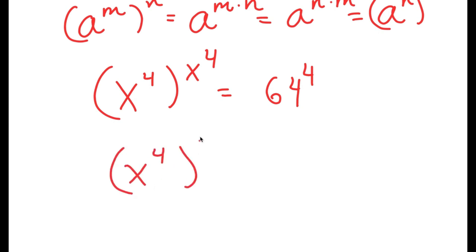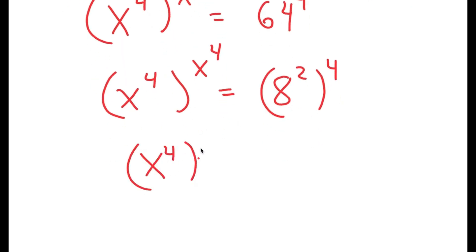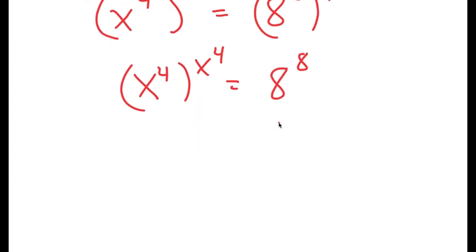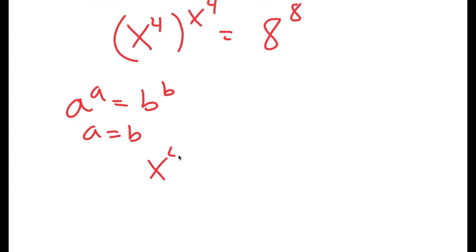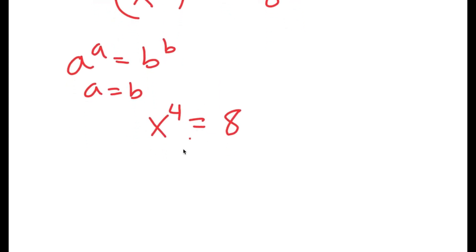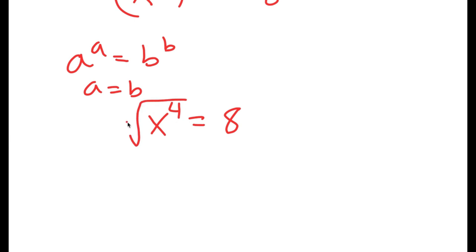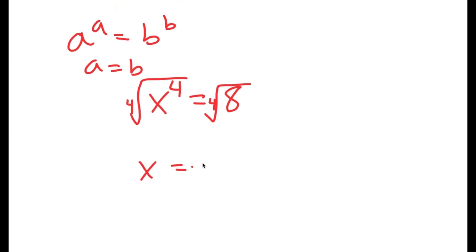Now 64 to the power of 4 I can rewrite as 8 squared to the power of 4, which turns into 8 to the power of 8. If I have a to the power of a equals b to the power of b, this means a equals b. So x to the power of 4 equals 8. To solve for x, I take the fourth root on both sides, so x is equal to positive or negative fourth root of 8.